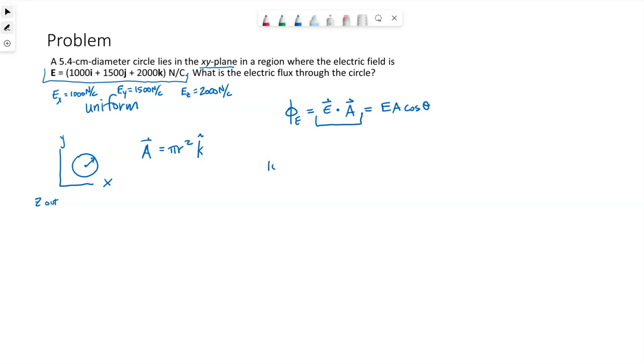So our electric field vector is this. We're dotting it. The area pi r squared, let's see, the radius is going to be half of that 5.4 centimeters, which I'm going to put in meters.